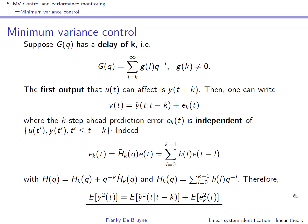The assumption we make about the system is that the input-output transfer function G of Q has a delay of K. This is visible because the impulse response starts at L equal to K. Since there is a delay of K, the first output that U of T can affect at time T is Y of T plus K. Therefore, we will write Y of T as the K-step-ahead prediction of Y plus the error that you make.